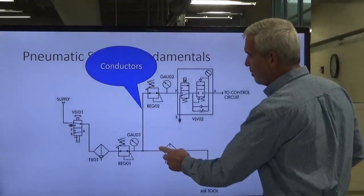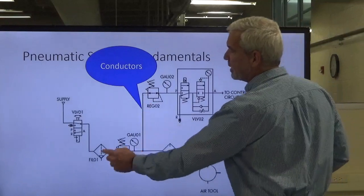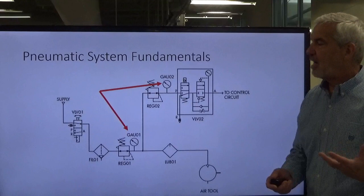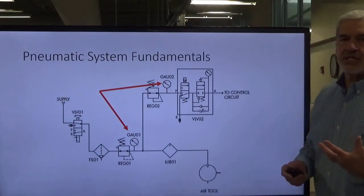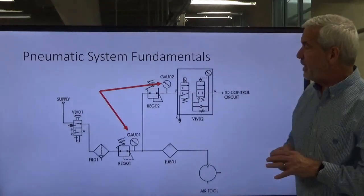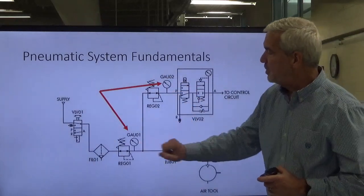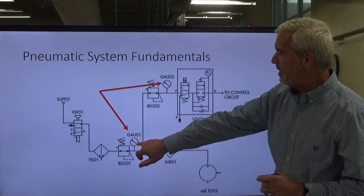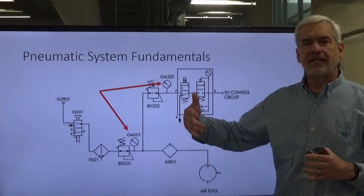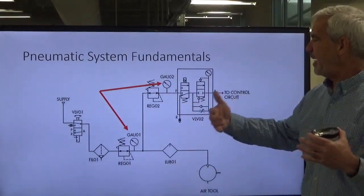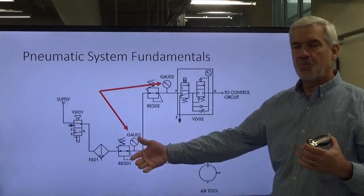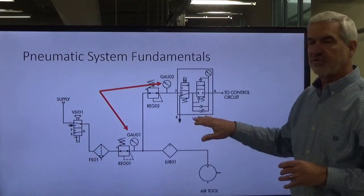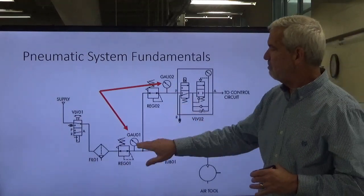These lines that you see on this drawing, anywhere there's straight lines like that, that's just conductors showing how things are piped and plumbed. Here is the symbol for a gauge on a schematic, and in this case it looks like we've got three.